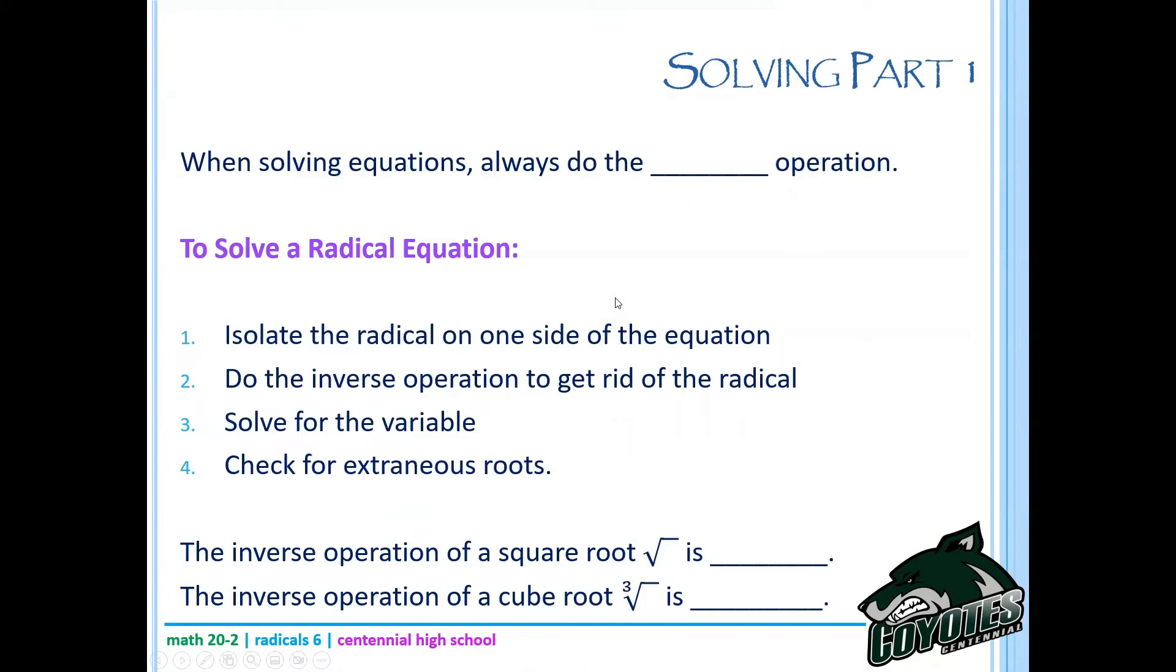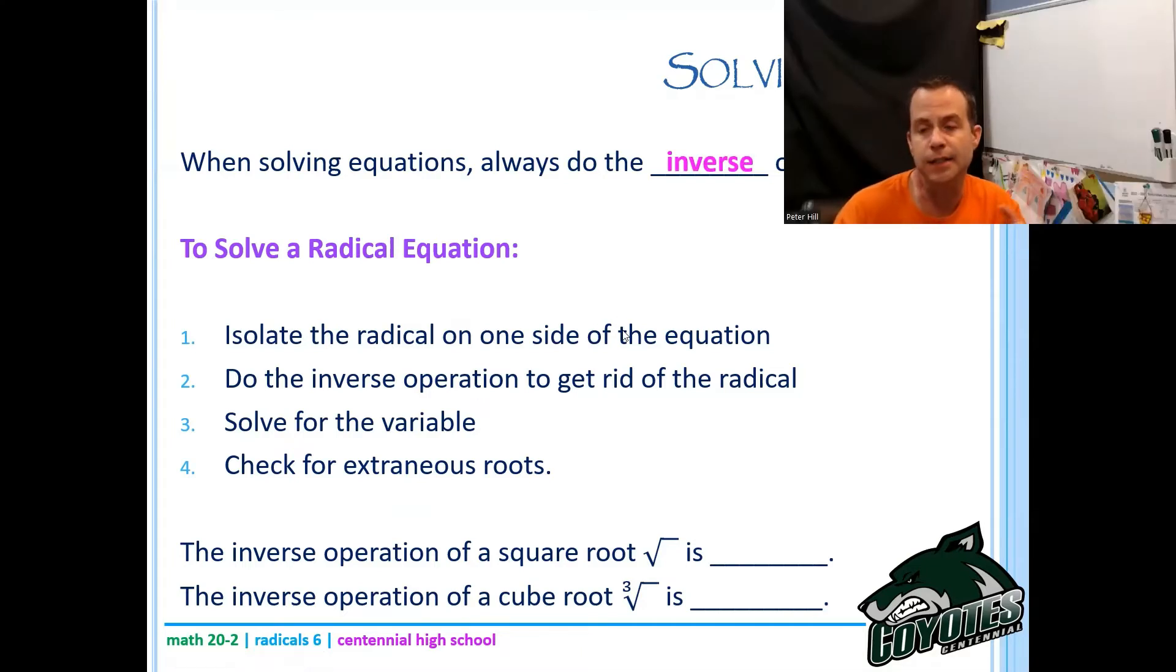When solving equations, we always do the inverse operation. The inverse operation is the thing that undoes what you're looking at. So if you are trying to undo addition, you subtract. If you are trying to undo multiplication, you divide. If you are trying to undo a square root, you take the square. And if you're trying to undo a cubed root, you would take the cube of both sides. So to solve a radical equation, isolate the radical on one side of the equation, do the inverse operation to get rid of that radical, then solve for the variable and then check for extraneous roots.